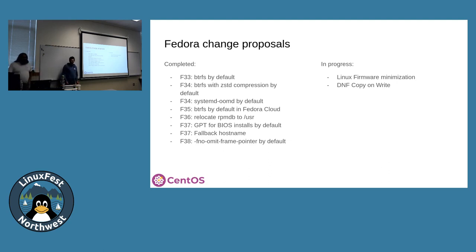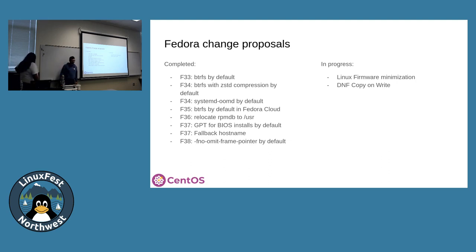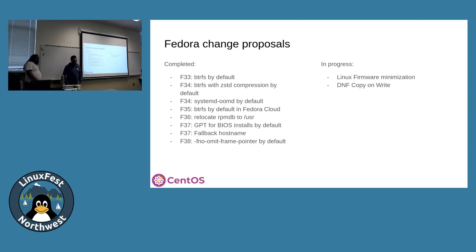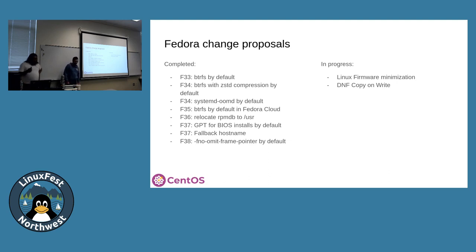We also have a number of things in progress. Michel is working on firmware minimization — splitting up the linux-firmware package, which is 800 megabytes, into a more granular fashion so you don't need firmware installed for hardware you don't have. We've also been working since Fedora 33 on copy-on-write for RPM, an enhancement to the RPM packaging suite that leverages the copy-on-write features of the file system to make package operations more efficient, especially installation in image-building contexts. It does exist and work, and we're hopeful it will land in the distribution in the future.